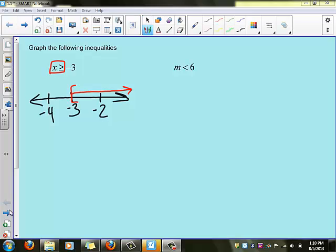And then for the second one, once again we need a number line. Notice this time we want the numbers that are less than 6, but 6 is not included, so we'll use a parenthesis, and we want all the numbers less than 6.